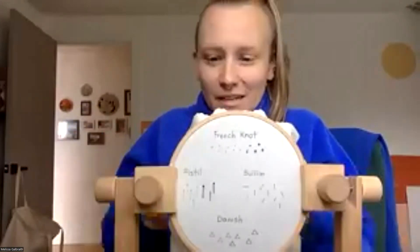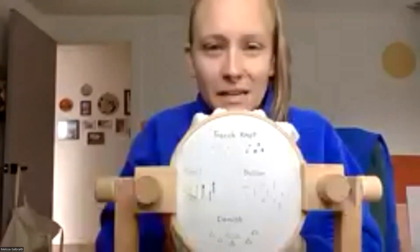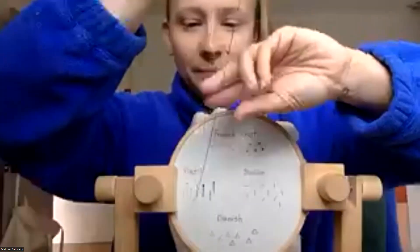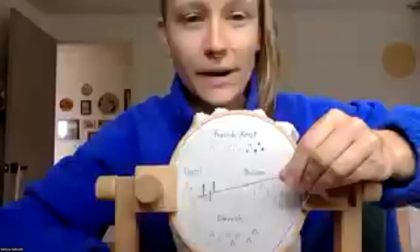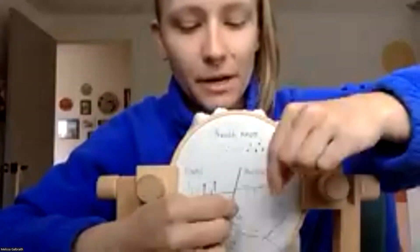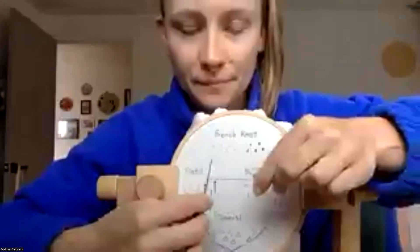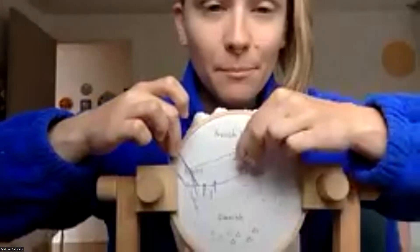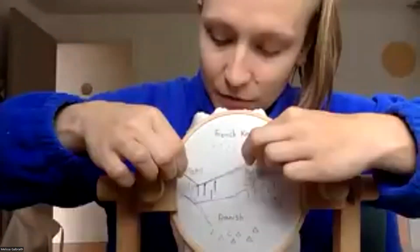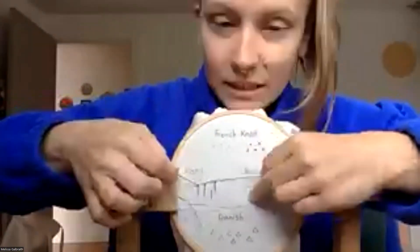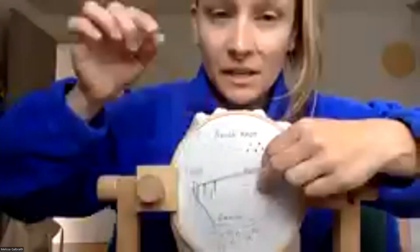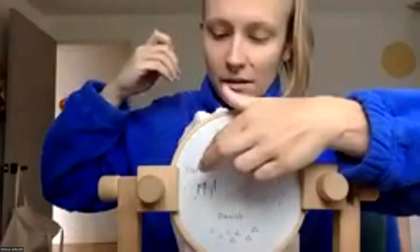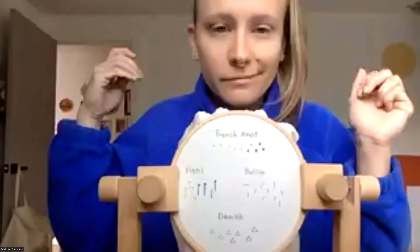Let me do that again. Bring our needle up where we want the bottom of our straight stitch. Hold our thread, wrap, and then bring our needle back down into the fabric at the top of our line. Gently tug so everything is nice and tightly wrapped, and our straight stitch is flush with the fabric, then push it on through. There you go.